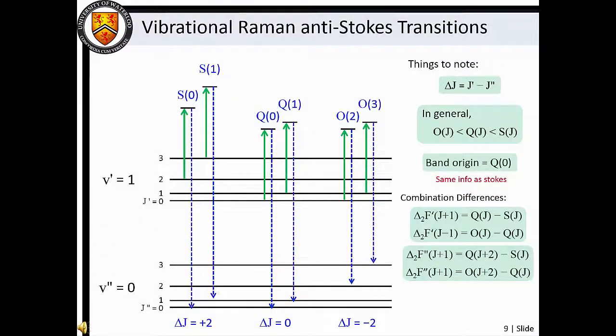In contrast to vibrational Stokes transitions, vibrational anti-Stokes lines are associated with de-excitation from a high energy vibrational state to a low energy vibrational state. Owing to conservation of energy, the energy lost by the molecule in this process is gained by the scattering photon. Again, we must consider the Δj equals zero plus or minus two selection rules, so S, Q, and O branches are again observed.